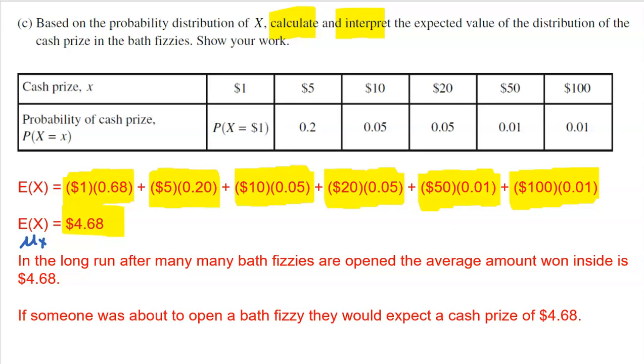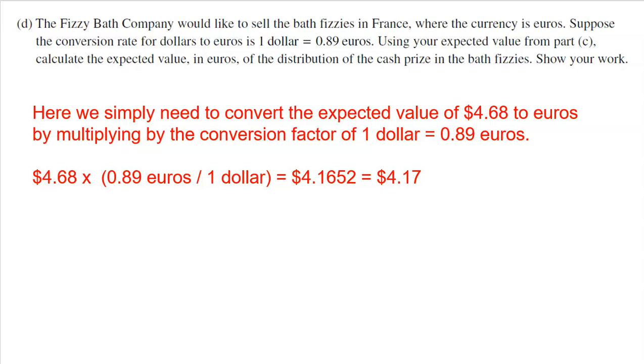All right, now I was all prepared for question D to be super hard, but it was unbelievably easy. The Fizzy Bath Company would like to sell the bath fizzies in France where the currency is euros. Suppose that the conversion rate for dollars to euros is $1 equals 0.89 euros. Using your expected value from part C, calculate the expected value in euros of the distribution of cash prizes in the bath fizzies. Show your work. So here we simply have to convert our expected value from dollars in the United States to euros in France. All we have to do is multiply by the conversion factor.